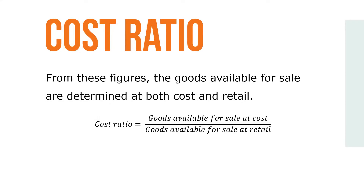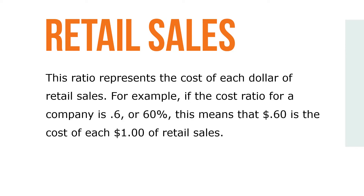From these figures, the goods available for sale are determined at both cost and retail. When they calculate the ratio, it's known as the cost-retail price ratio, or simply the cost ratio. By the formula, cost ratio equals goods available for sale at cost over goods available for sale at retail. This ratio represents the cost of each dollar of retail sales. For example, if the cost ratio for a company is 0.6 or 60%, this means that $0.60 is the cost of each dollar of retail sales.